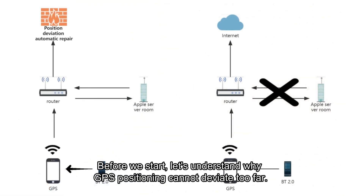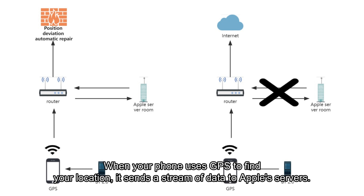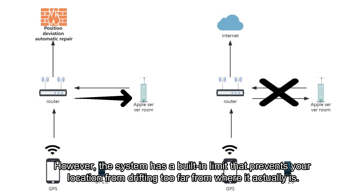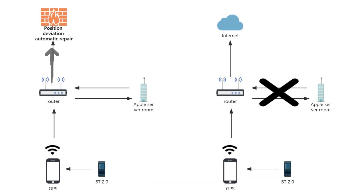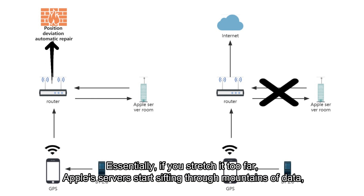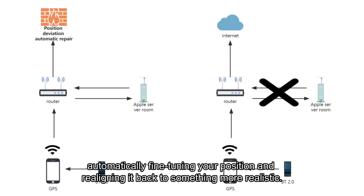Before we start, let's understand why GPS positioning cannot deviate too far. When your phone uses GPS to find your location, it sends a stream of data to Apple's servers. However, the system has a built-in limit that prevents your location from drifting too far from where it actually is. Essentially, if you stretch it too far, Apple's servers start sifting through mountains of data, automatically fine-tuning your position and realigning it back to something more realistic.